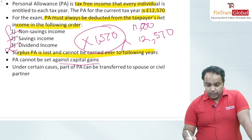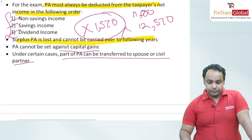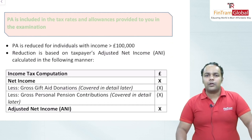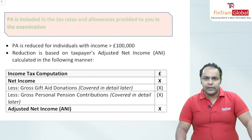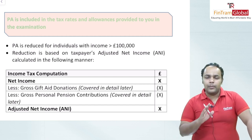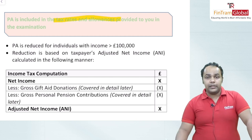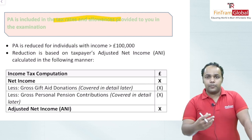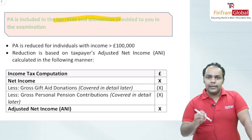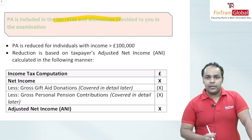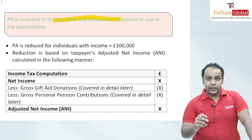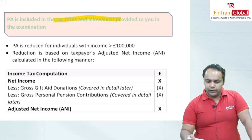Under certain cases, a part of the PA can be transferred to a spouse or civil partner. You don't have to worry about remembering the numbers or thresholds — these will be provided to you in the tax rates and allowances sheet in the examination, including the PA threshold of £12,570. All you have to focus on is understanding the concepts and practising enough questions.